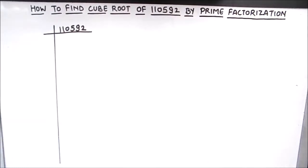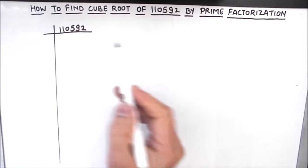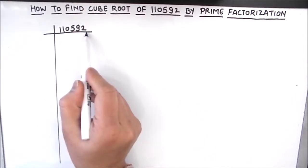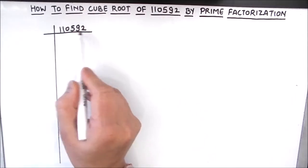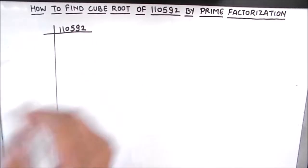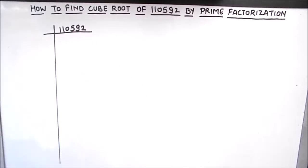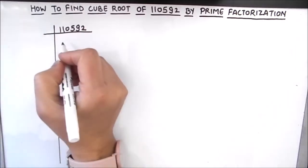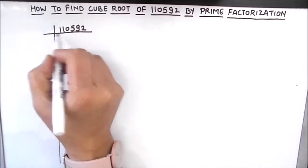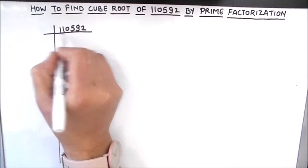Hello everyone. In this video we are going to learn how to find the cube root of 1,10,592 using the prime factorization method. We will find the prime factors of this number by dividing it by prime numbers, then write it as a product of its prime factors, and find the cube root. So let's start.